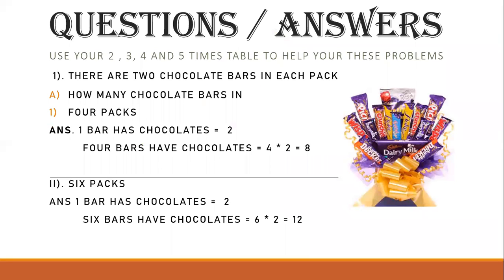We have questions and answers for this topic. Use your two, three, four, and five times tables to help you solve these problems. The first one we have is: there are two chocolate bars in each pack.